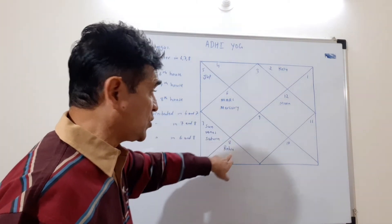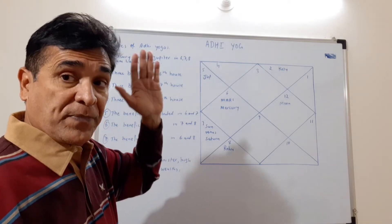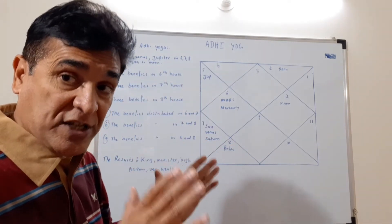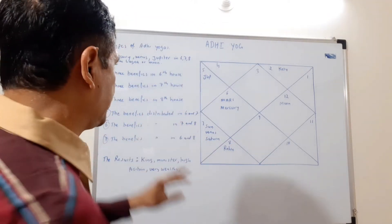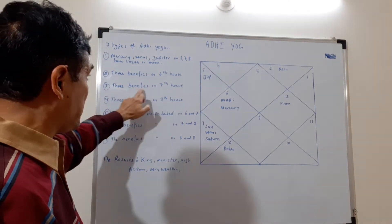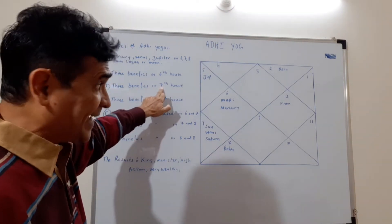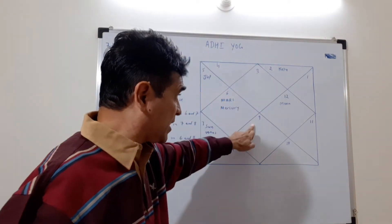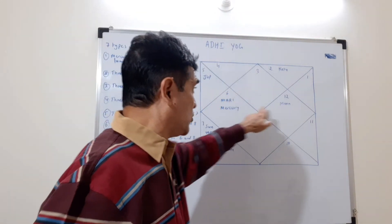The third type is three benefic planets in the seventh house from the Lagna or from the Moon. The next says three benefics in your eighth house.